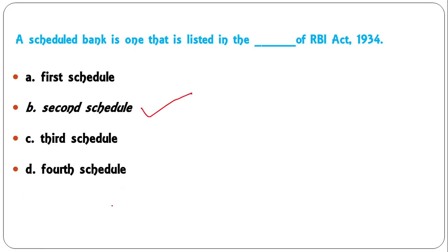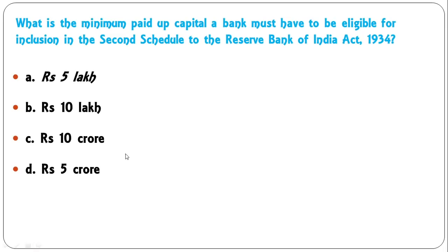What is the minimum paid-up capital a bank must have to be eligible for inclusion in the second schedule of the Reserve Bank of India Act 1934 — 5 lakh, 10 lakh, 10 crore, or 5 crore? The minimum paid-up capital required is rupees 5 lakh to be included in the second schedule of the RBI Act.